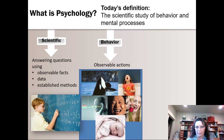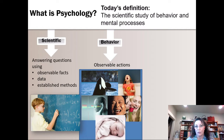Here we have a child standing in the corner. Just from this picture, all we can really say is that the child is standing in the corner, mouth wide open, teeth bared, and hands in fists. Now, you might be drawing inferences from that picture and assuming that the child is being punished and that the child is angry about it. You might draw those inferences, but that's not an observable action.